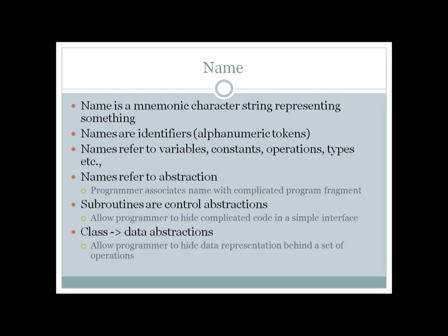The second abstraction is control abstraction. Control abstractions are names given to modules or functions — you are abstracting the content of a function inside a name. So names normally refer to two abstractions: data abstraction, which is the binding of a name to its corresponding object, and control abstraction, which is the binding of a name to a function.